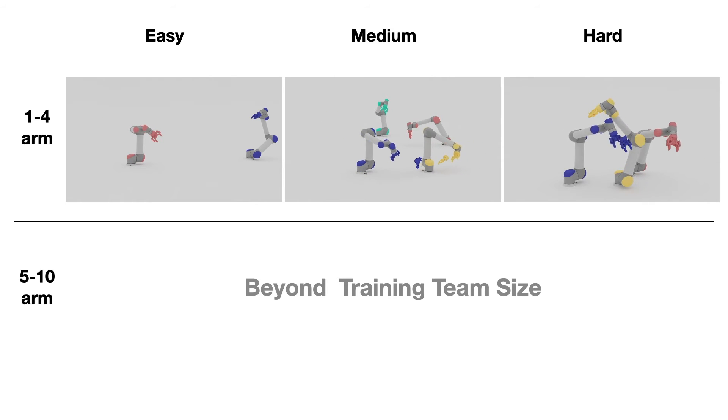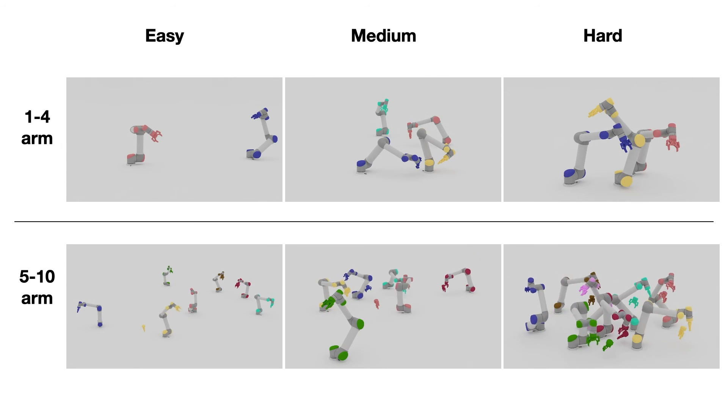Despite being trained on only 1-4 arm tasks, our policy is able to perform well on 5-10 arm tasks.